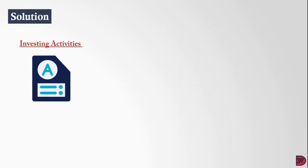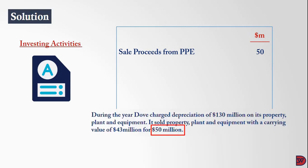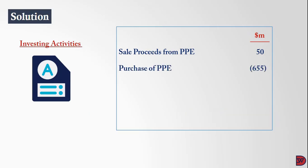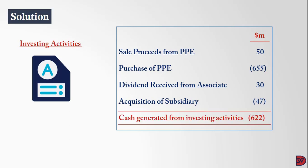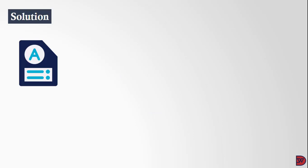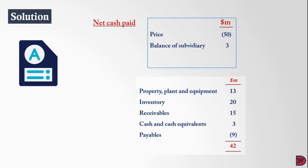Moving on to investing activities: proceeds from the sale of property, plant and equipment are 50 million dollars. We subtract the purchase of property, plant and equipment of 655 million. Dividend received from associate is 30 million (added). The acquisition of the subsidiary required a net cash payment of 47 million dollars, since the purchase price was 50 million but the subsidiary held 3 million in cash. This leads to cash used in investing activities of an outflow of 622 million dollars.